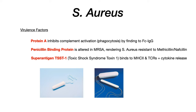Bottom line: superantigen TSST1 causes toxic shock syndrome with high fever and organ damage — elevations in liver enzymes and bilirubin — due to constant stimulation of MHC2 and T cell receptors, which causes a massive release of cytokines.